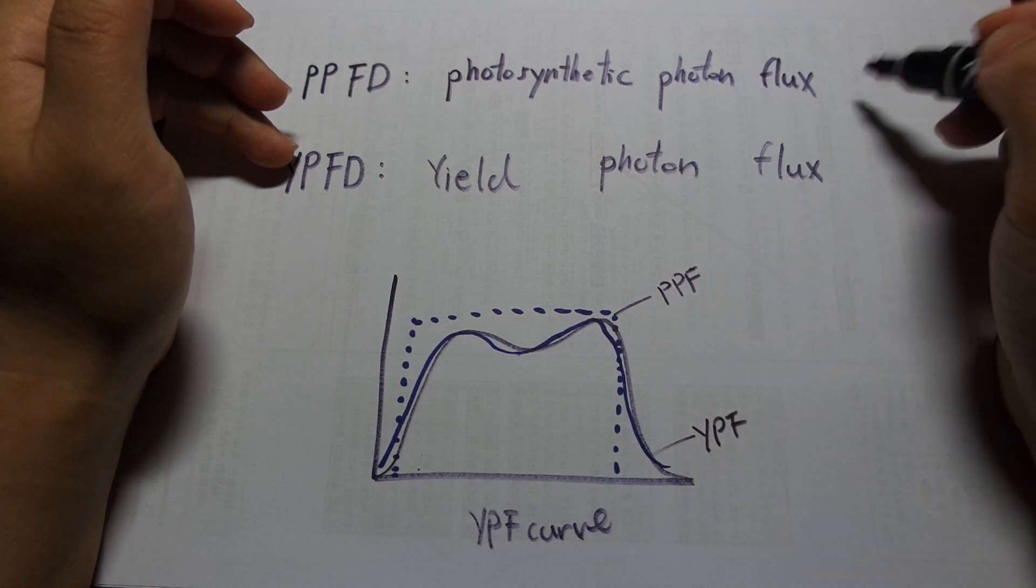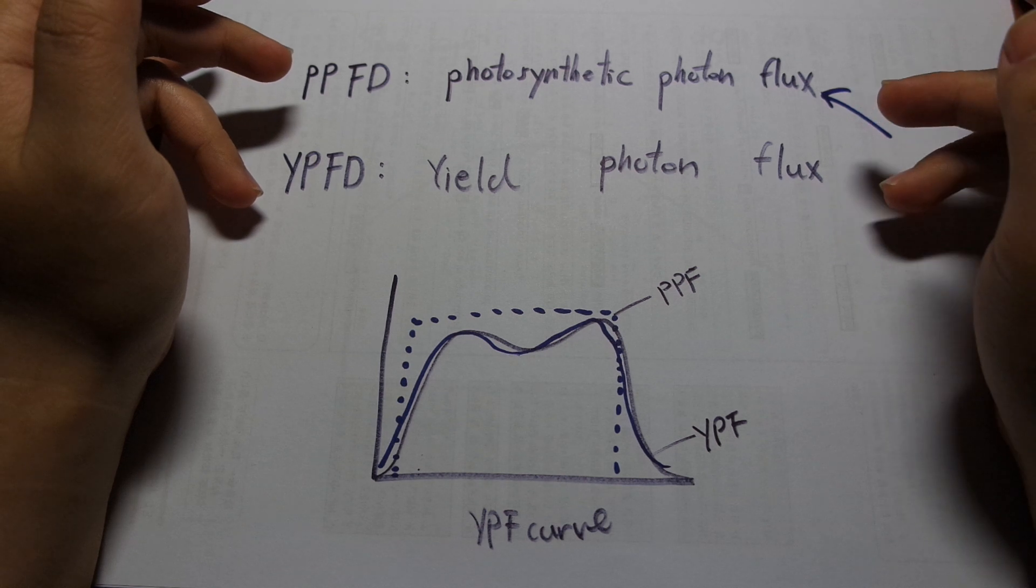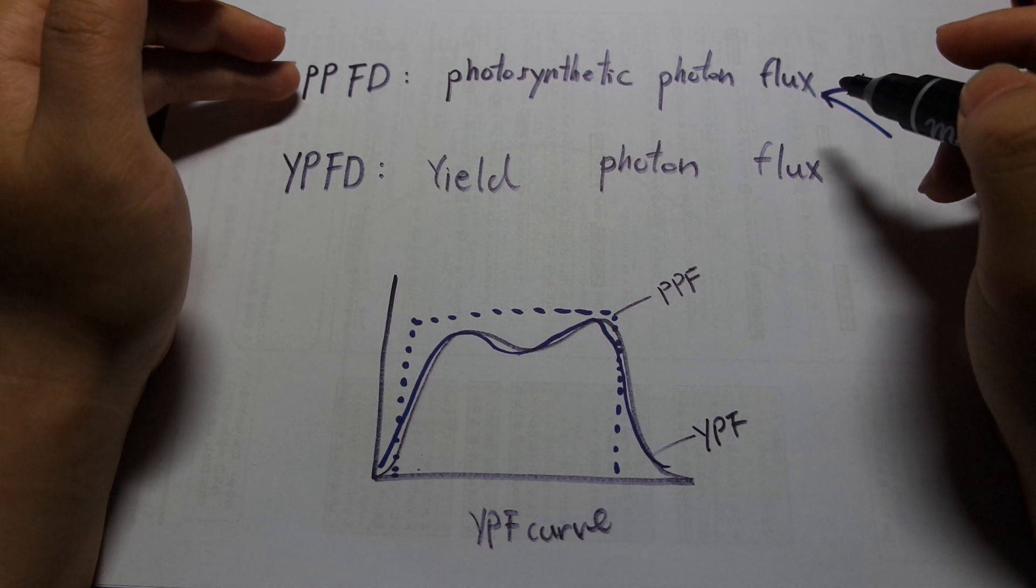Most PAR measurements actually use PPFD. They don't really weight photons differently. So usually if you see a PAR value, it's PPFD.